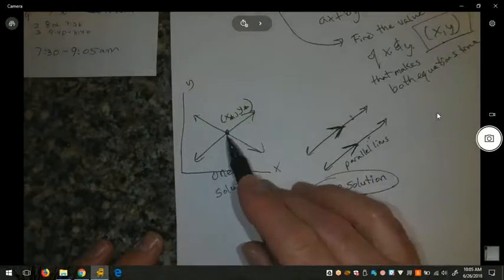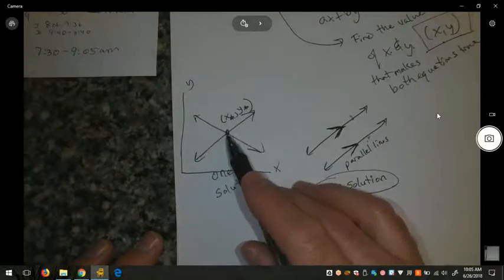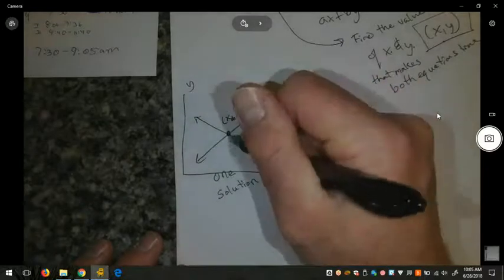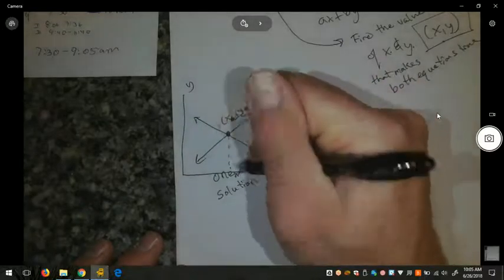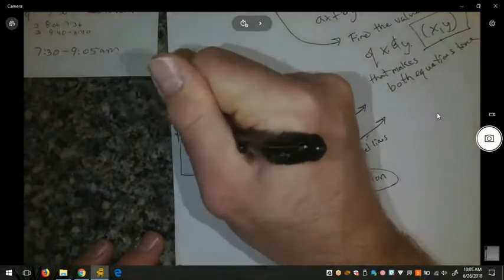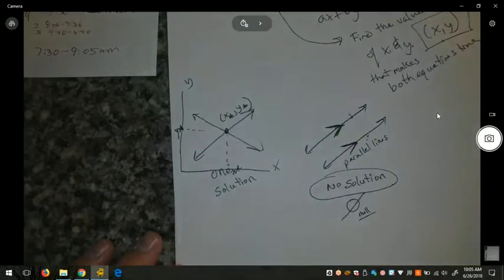When they intersect, we'll be able to find that point that makes both of them true at the same time. That x-coordinate and y-coordinate that is our solution point.